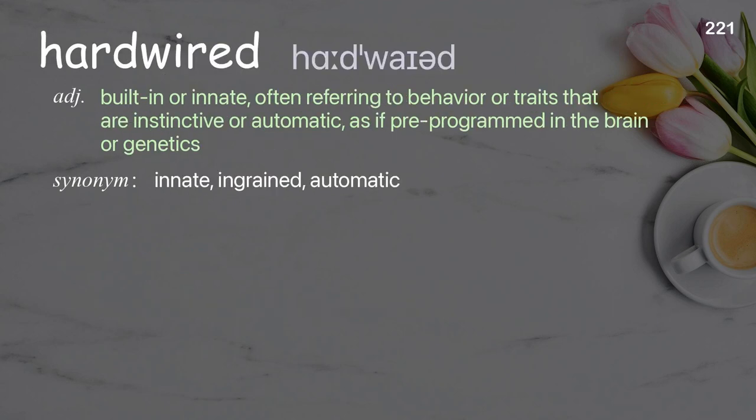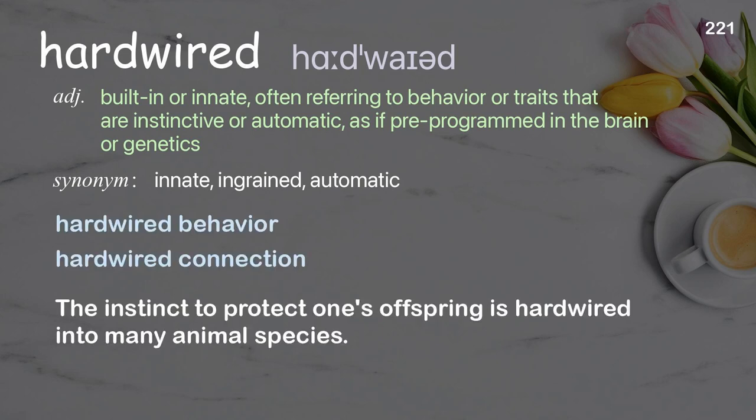Hardwired. Built-in or innate, often referring to behavior or traits that are instinctive or automatic, as if pre-programmed in the brain or genetics. Examples: hardwired behavior, hardwired connection. The instinct to protect one's offspring is hardwired into many animal species.